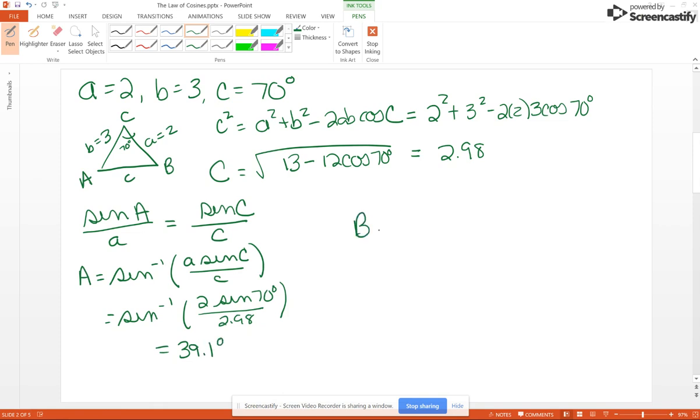Now B is going to be much easier. You take 180 - 70 - 39.1° and we get 70.9°, and we are done with this problem.